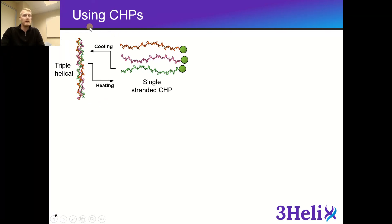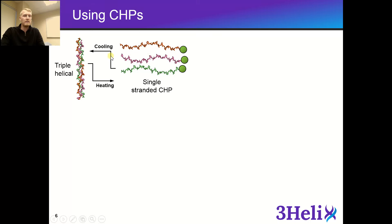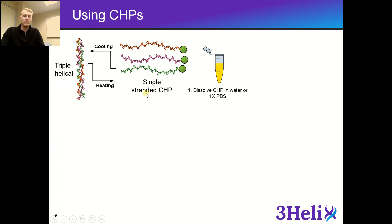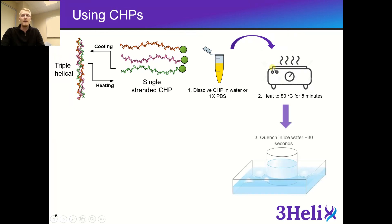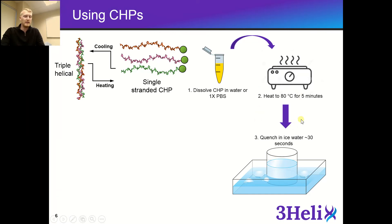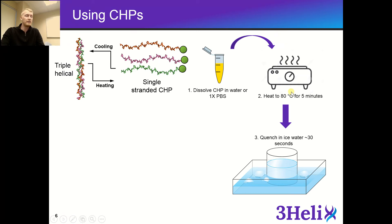It's important to note that even after you heat the CHPs up, after some amount of time, depending on how long you leave them, the CHPs will begin to cool down and can refold into a triple helix with themselves. Upon receiving CHPs, you'll dissolve the CHP powder in either water or PBS, heat the CHP solution to 80 degrees C for roughly five minutes, and then quickly quench your CHP solution in an ice water bath for roughly 30 seconds. This is important because if you want to use it for tissue staining, you don't want a hot CHP solution causing damage to your tissue section, as that will give you a false positive by thermally denaturing collagen strands within your tissue section.